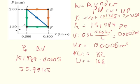One thing to make clear: the work that the system does on the environment equals the positive area under the PV diagram. The work done on the gas is the negative of that area. So if P times ΔV equals 75.9945, then the work done on the gas is negative 75.9945 joules.